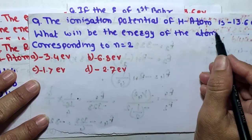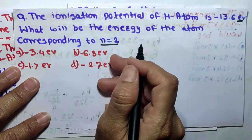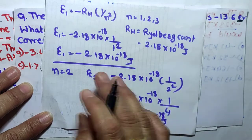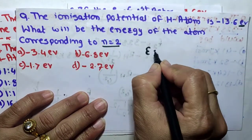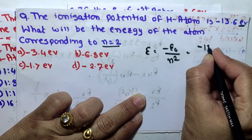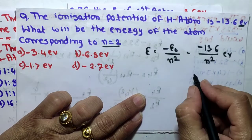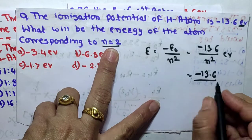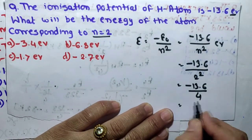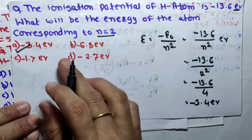MCQ 4: The ionization potential of hydrogen atom is 13.6 eV. What will be the energy of the atom corresponding to n = 2? Using the formula E = −13.6/n² eV (in electron volts), E2 = −13.6/2² = −13.6/4 = −3.4 eV. Therefore option 1 is the correct answer.